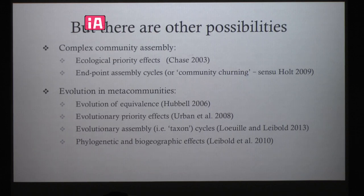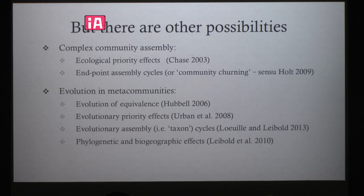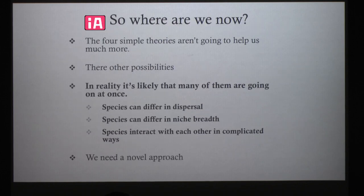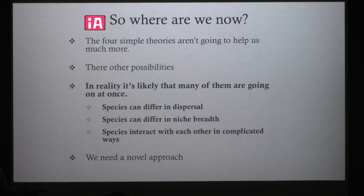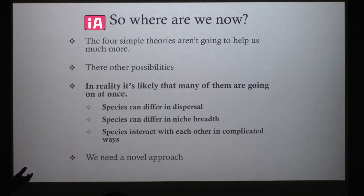There are other possibilities we hadn't considered in 2004, including ecological priority effects, rock-scissors-paper kind of assembly rules, and the evolution of species within metacommunities. What I'm trying to convince you of is that these four ideas are selling us short — they're not capturing the full range of possible things that can happen. The variation partitioning is a very crude tool. We're just going to put more dots on that triplot and find that yeah, everything lies somewhere between Hubbell and Leibold, just filling it in.